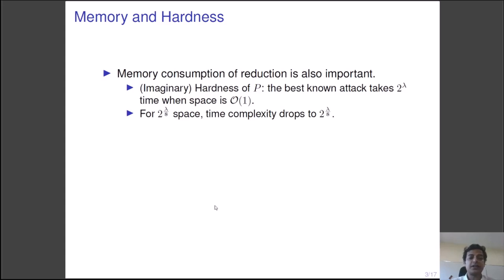Interestingly, the traditional definition of tightness does not take memory into consideration. However, memory consumption of the reduction is also a very important parameter. Consider primitive P against which the best known attack works in 2 to the power lambda time when only constant space is given. However, if more memory is available, say 2 to the power lambda by 8, then the time requirement of the adversary drops to 2 to the power lambda by 8 as well.